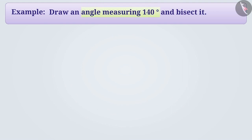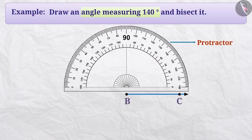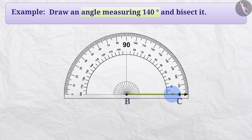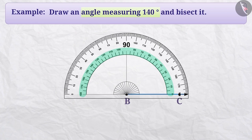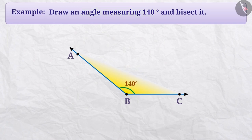To draw an angle measuring 140 degrees, first draw a ray and name it BC. Place the protractor on ray BC so that the centre is at point B and the zero edge completely covers the ray. We will use the protractor scale whose zero degree is close to C, find the mark representing 140 degrees, and mark a point in front of it — name it A. Taking point B as the vertex, draw a ray through point A. We get angle ABC measuring 140 degrees. Now let's bisect it.